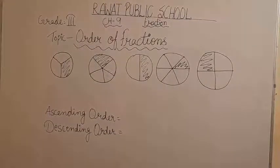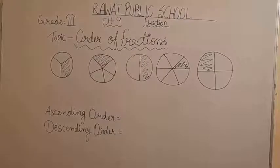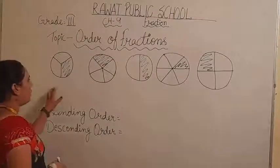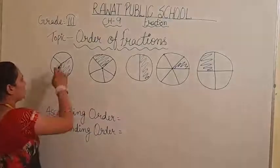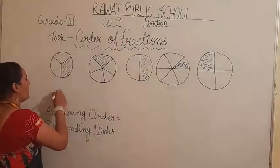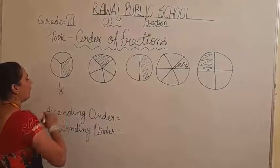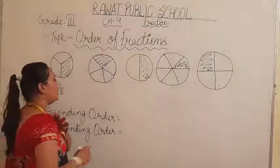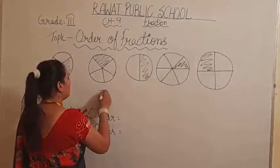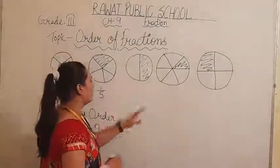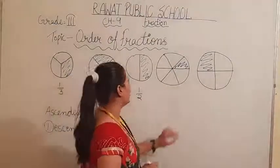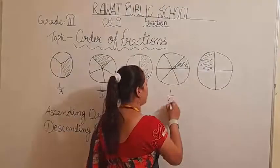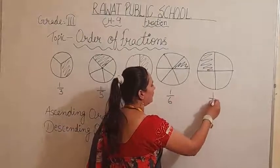In the second example you can see a few circles are drawn on the board, all having different fractions. In the first picture you can see 3 divisions of one circle, so 1 by 3. Then 1 by 5, then 1 by 2, then 1 by 6, and in the last one 1 by 4.